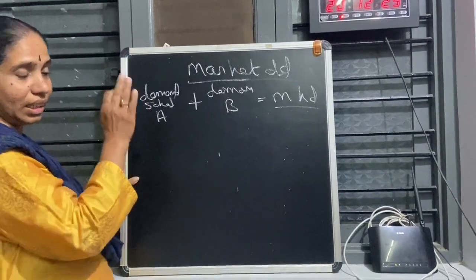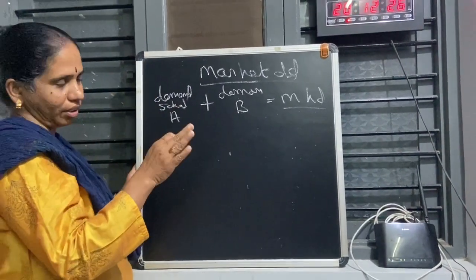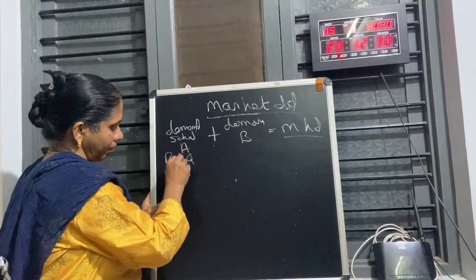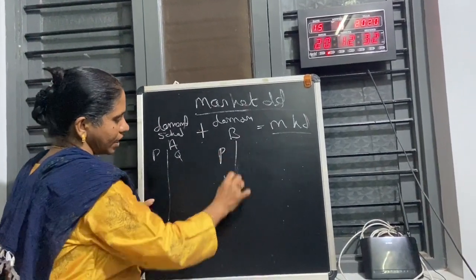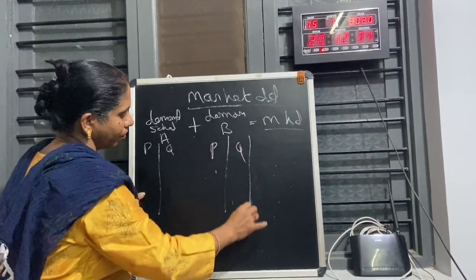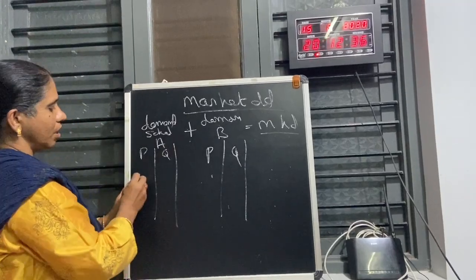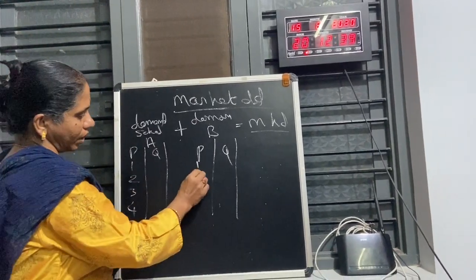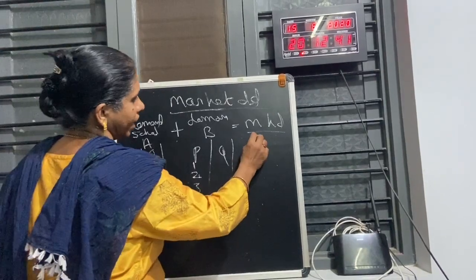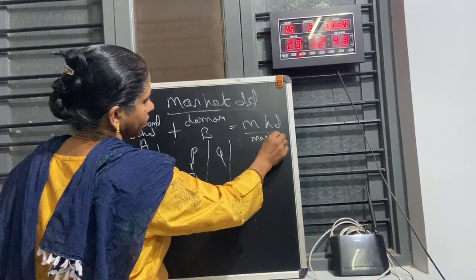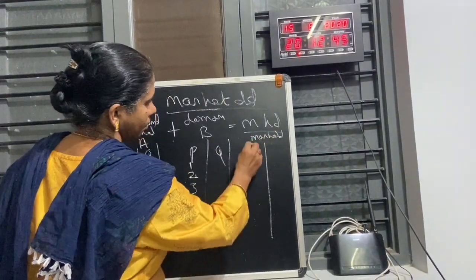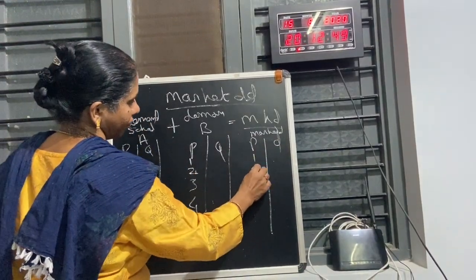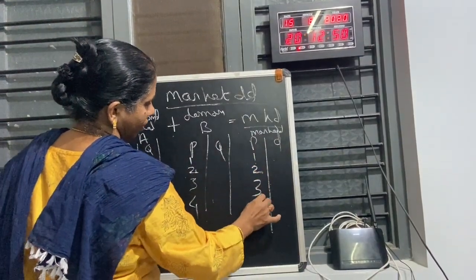This is very easy because once you understand the law of demand, it is easy to understand. So we have price and quantity here. Same way here also price and quantity. Price will be the same for everything — even for market demand, price and demand are listed. Only the demand will change; price will be the same.